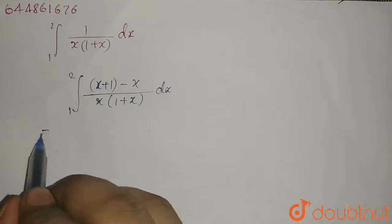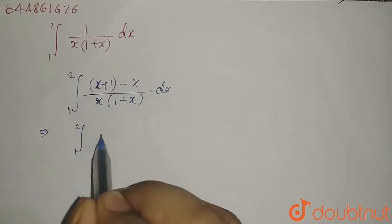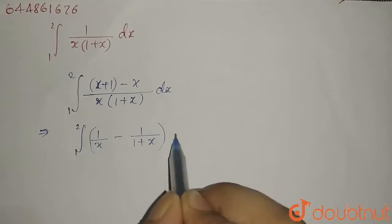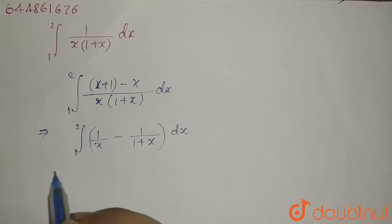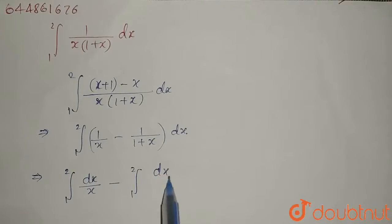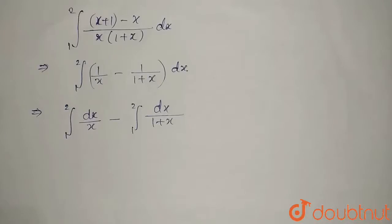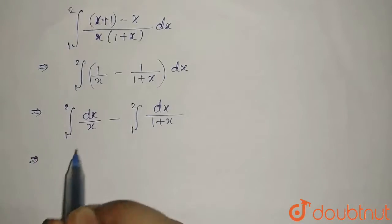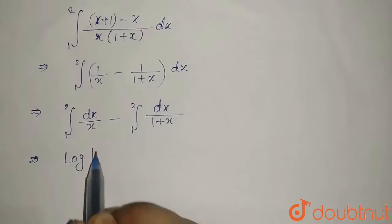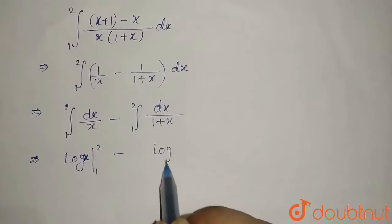Now we can write this as integral from 1 to 2 of 1 upon x minus 1 upon 1 plus x. We can split this as integral 1 to 2 dx by x minus integral 1 to 2 dx upon 1 plus x. The integral of 1 upon x is ln x.